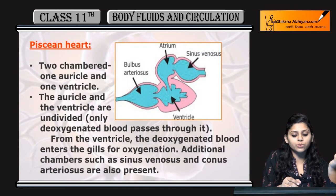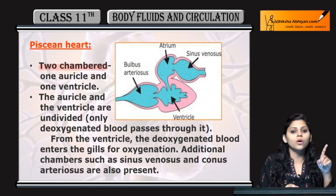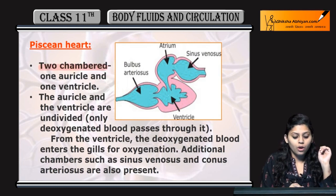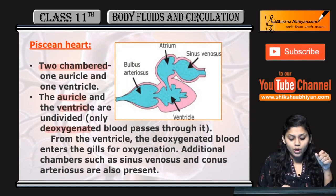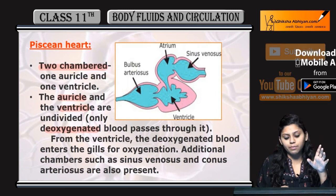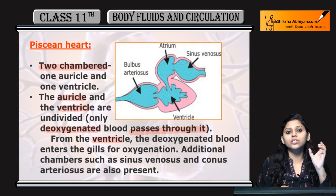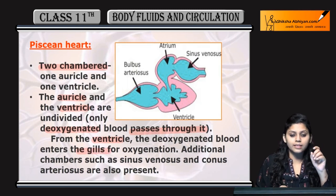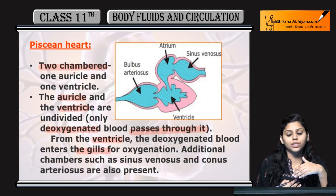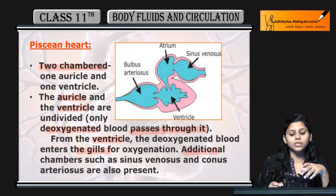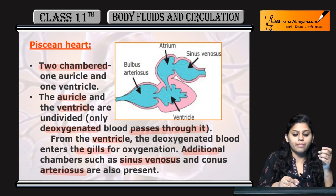Piscean heart is 2-chambered — one auricle and one ventricle. Auricle and ventricle are undivided. Only deoxygenated blood passes through it. From the ventricle, deoxygenated blood enters the gills. In the gills, oxygenation of deoxygenated blood occurs. Additional chambers are present: sinus venosus and conus arteriosus.